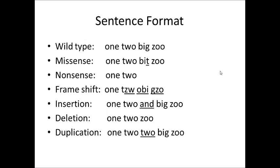Let's introduce our first mutation: the missense mutation. The sentence would read: one, two, bit, zoo. The T is underlined as the mutation — we have a change in one of the letters. It doesn't affect the rest of the sentence, and for the most part the body can still understand it. 'Bit' sounds like 'big' — kind of the same thing. Yes, it changes the word, but it will not change much overall.